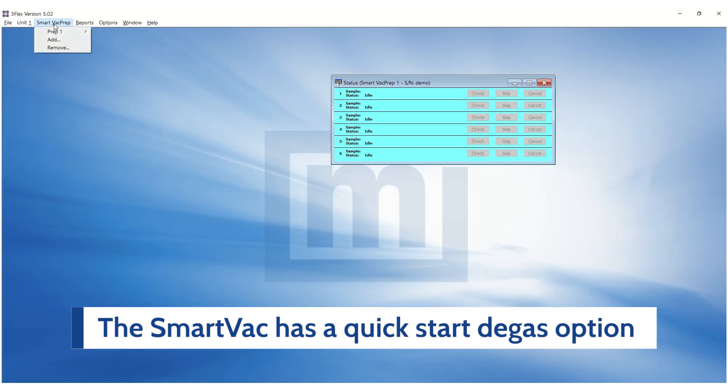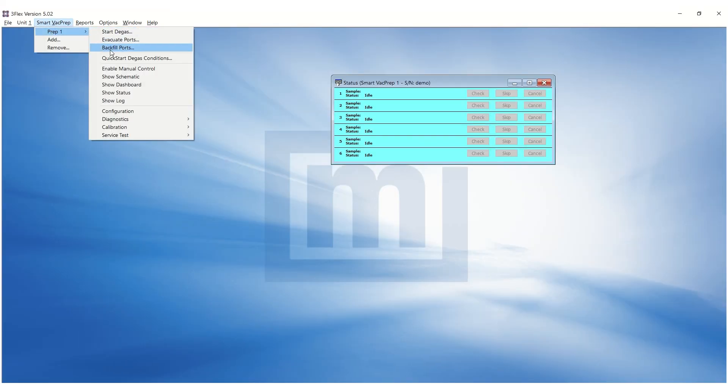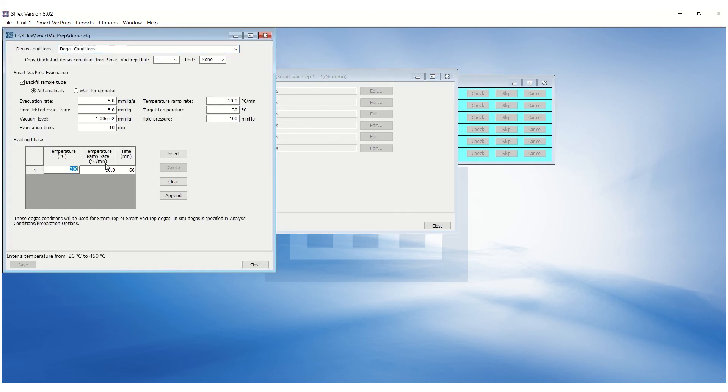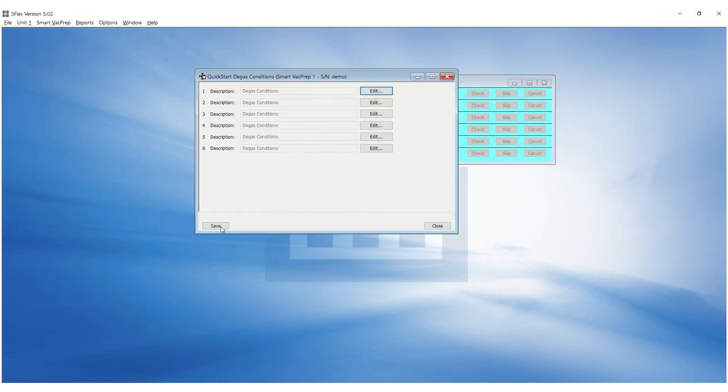There is an option to quick start degas. On the software, go to the SmartVacPrep menu, prep, and quick start degas conditions. Click on the edit for each port to enter desired degas conditions. Save and close the degas conditions. Save and close the quick start window.